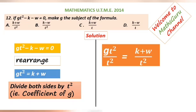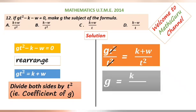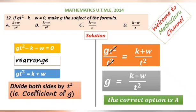We have GT square over T square equal to K plus W over T square. T square cancels out to give us G equal to K plus W over T square. Therefore, the correct option is A.